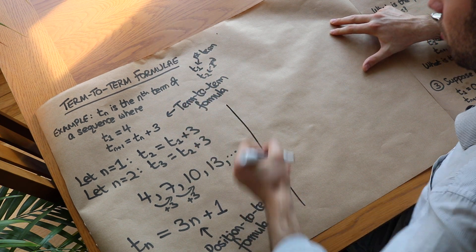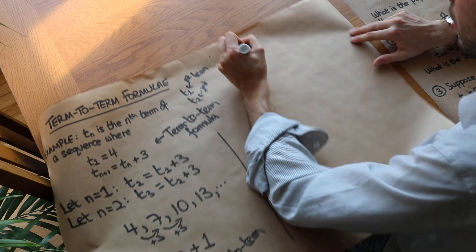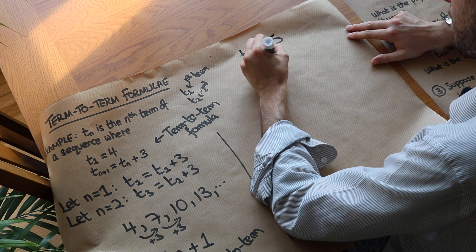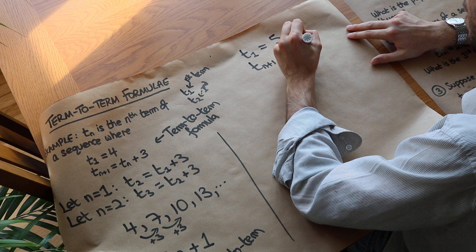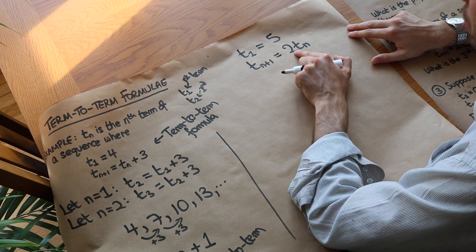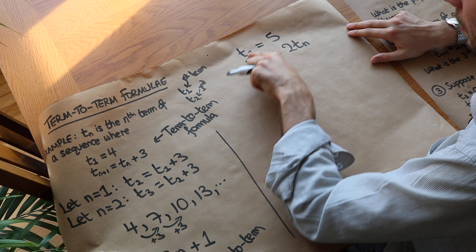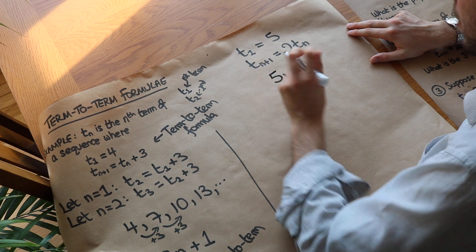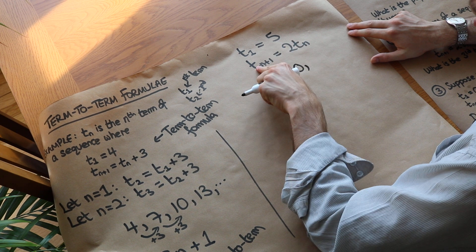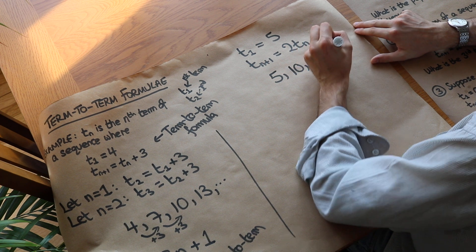Let's do one more simple example before moving on. If t1 equals 5 and tn+1 equals 2tn, that means the next term of the sequence is equal to two times the previous term. So the first term is 5, then t2 is 2 times 5 which is 10, then the third term is 2 times 10 which is 20, then 40, and so on.